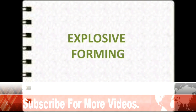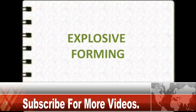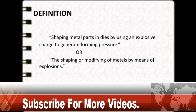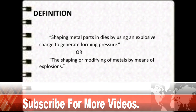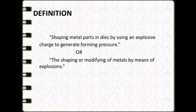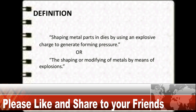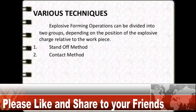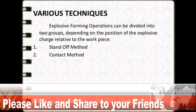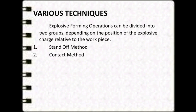In this video we will discuss explosive forming. Definition: shaping metal parts in a die by using an explosive charge to generate forming pressure. The shaping or modifying of metals by means of explosives. Explosive forming operations can be divided into two groups: number one, the standoff method, and number two, the contact method.